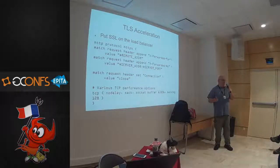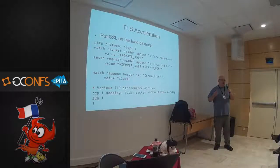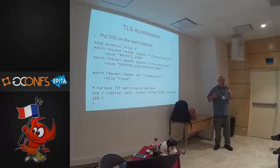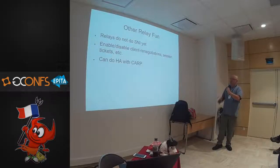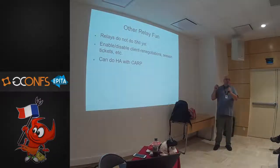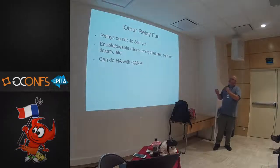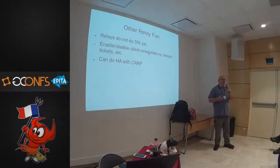Here's a config where you put SSL on the load balancer and take it off the web server. TLS acceleration is not as desperate a need as it once was; however, if you find yourself stuck and the new hardware hasn't arrived, it's nice to have the option to move that load elsewhere. Other things on relays: they do not do SNI yet — there is a rewrite in progress. You can enable and disable client-side renegotiations, session tickets, and you can do high availability with CARP.